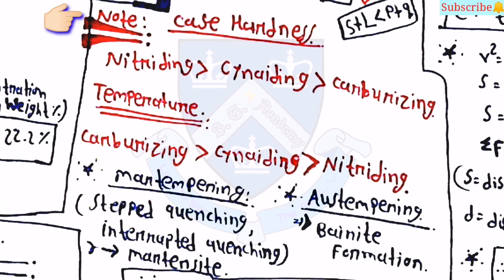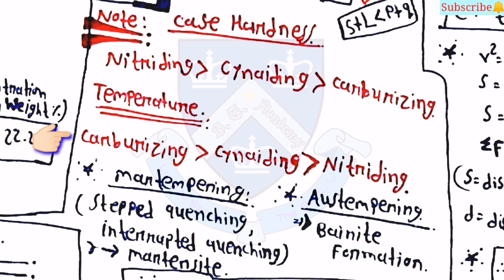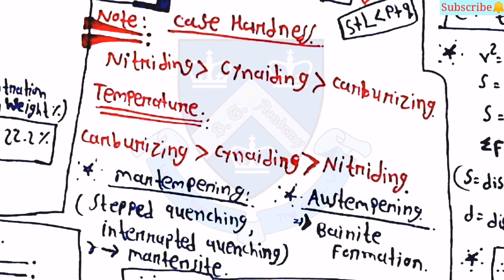For case hardening processes: nitriding produces the hardest surface, followed by cyaniding, then carburizing. For process temperature, carburizing requires the highest temperature, followed by cyaniding, then nitriding. In martempering, interrupted quenching is used — austenite is converted to martensite. In austempering, bainite formation occurs. These are key points to remember.